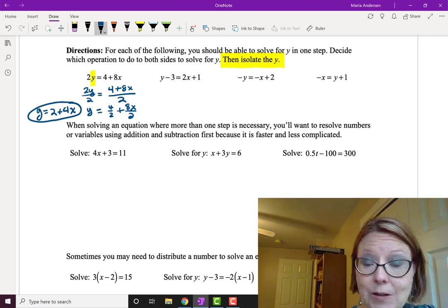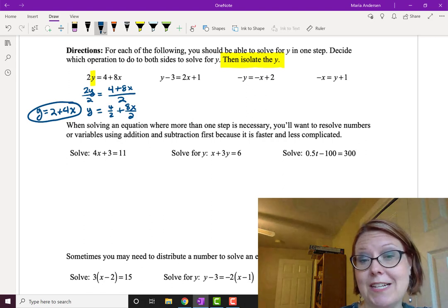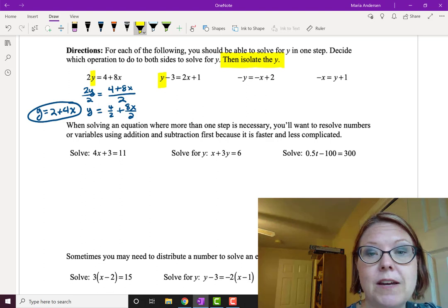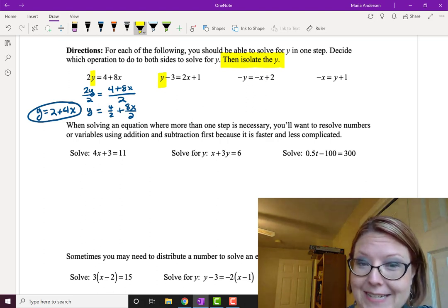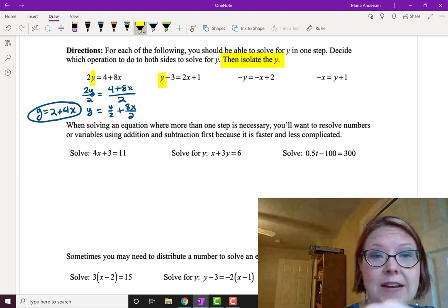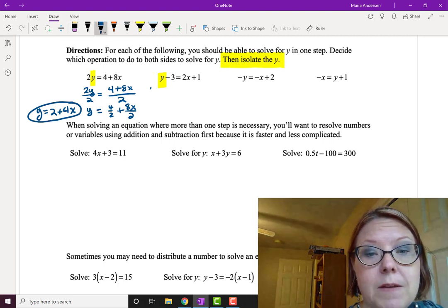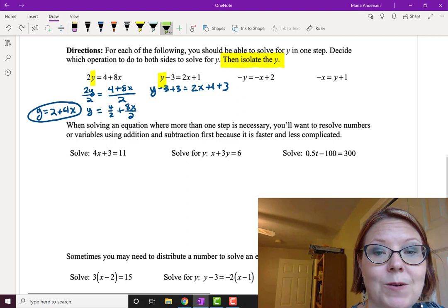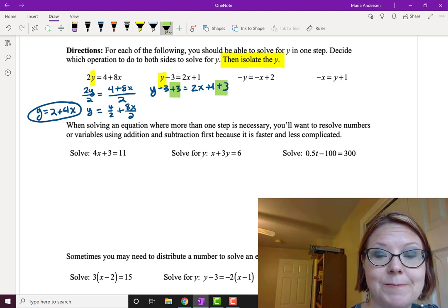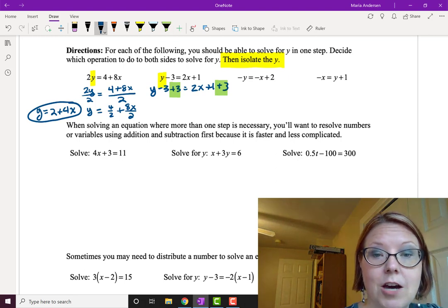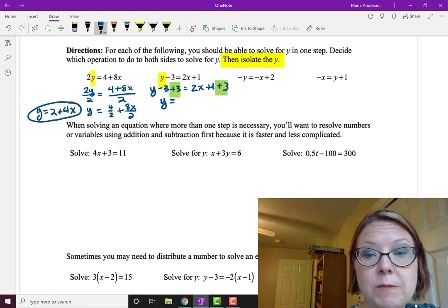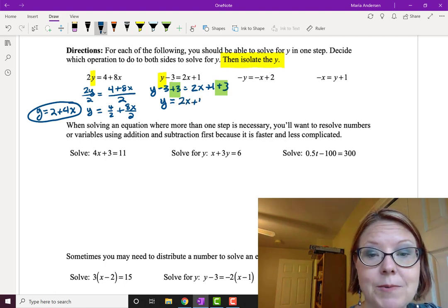In the second equation, y minus 3 equals 2x plus 1. I want to isolate the y, and I currently have y minus 3. So to get rid of the minus 3, I'm going to add 3. That gives me y minus 3 plus 3 equals 2x plus 1 plus 3. On the left, this simplifies to y, and on the right, I have 2x plus 4.